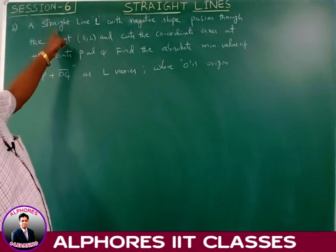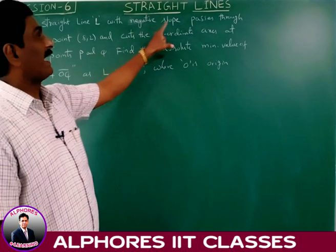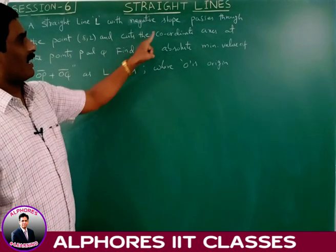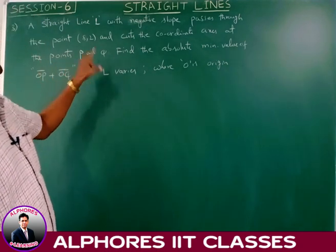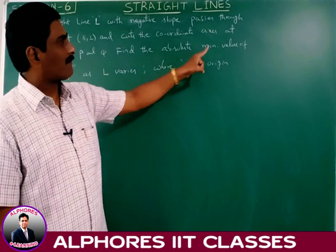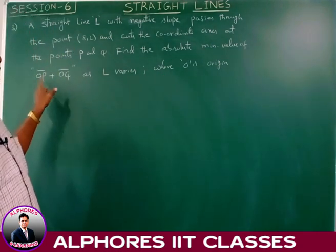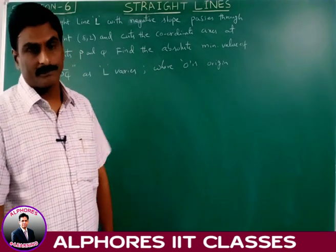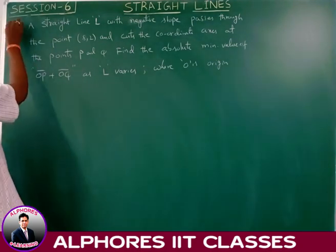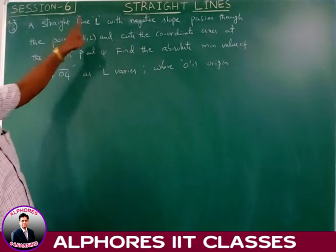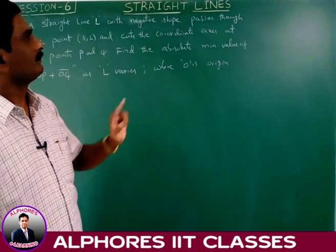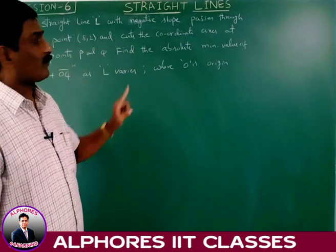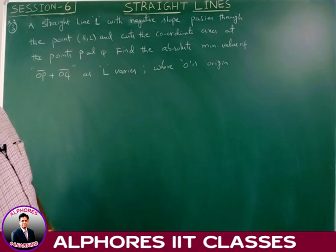Third problem — very very important: A straight line L with negative slope passes through the point (8, 2) and cuts the coordinate axes at points P and Q. Find the absolute minimum value of OP plus OQ, where O is the origin. The slope of line L is negative, so let slope equal minus M where M is greater than 0.